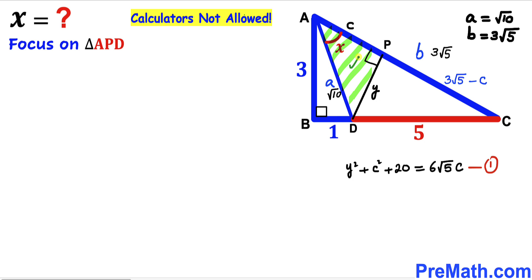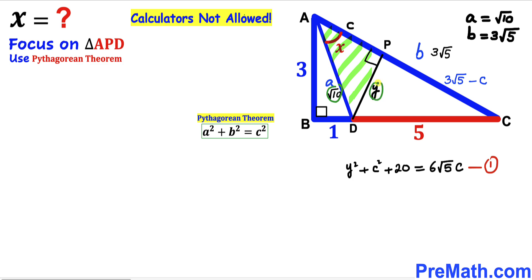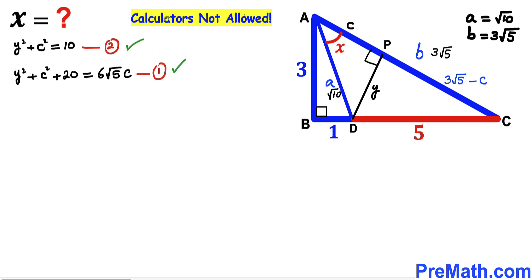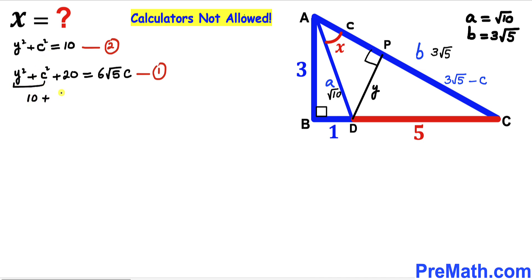Now we focus on right triangle APD and apply the Pythagorean theorem. The hypotenuse is √10 and the two legs are y and c. Filling in: y² + c² = (√10)² = 10. We label this as Equation 2. From Equations 1 and 2, we substitute y² + c² = 10 into Equation 1: 10 + 20 = 6√5·c.